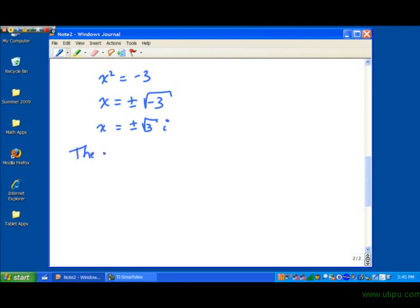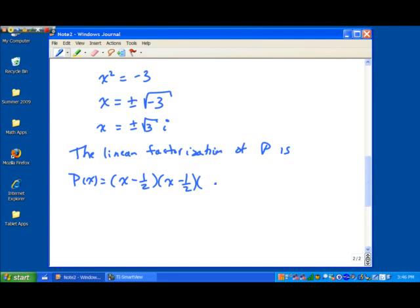So there we have it. It looks then that the linear factorization of P is, well let's see, P of x. And then we first have those repeated roots. I'll write it as x minus 1 half times x minus 1 half. And then we have x minus the square root of 3 times i. And then our other root, x plus the square root of 3 times i. So we've taken that fourth-degree polynomial function and rewritten it as a sequence of four linear factors. So we have two real roots with a multiplicity of 2.